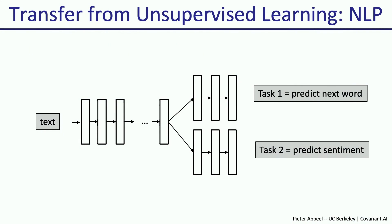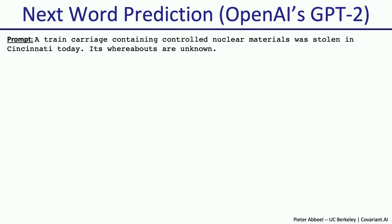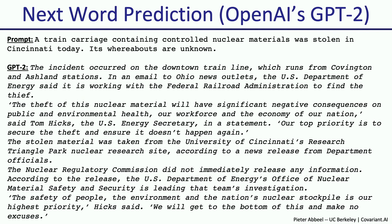In NLP, transfer from unsupervised learning works as follows: task one could be 'predict the next word' — using a lot of text from the internet with no annotation needed. Here's an example: GPT-2 from OpenAI. The top two lines are the prompt, and the neural network completes it. The result is a credible news article — it has completed this quite successfully.